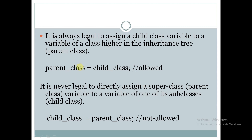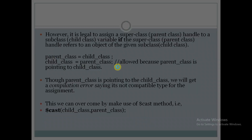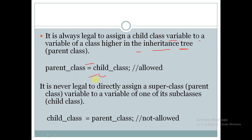Here we have to be careful with this type of assignment. It is always legal to assign a child class variable to a variable of a class higher in the inheritance tree. That is, a parent class handle can be assigned a child class handle — parent class can point to child class.